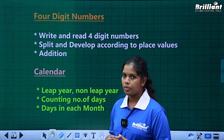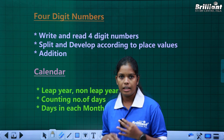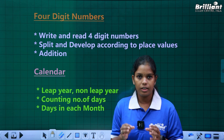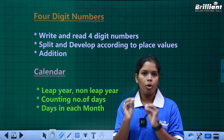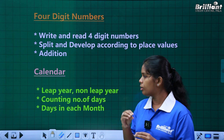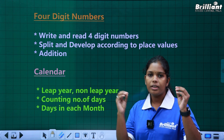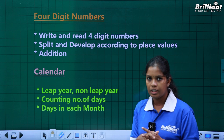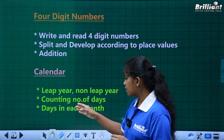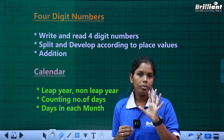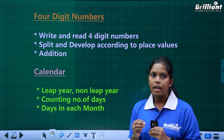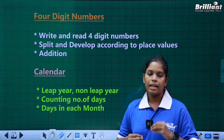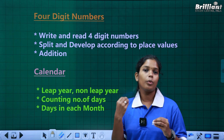Calendar — leap year or non-leap year — how to check. Counting the number of days and how different days work. Days in each month — whether a month has 30 days, 31 days, or 28 days.